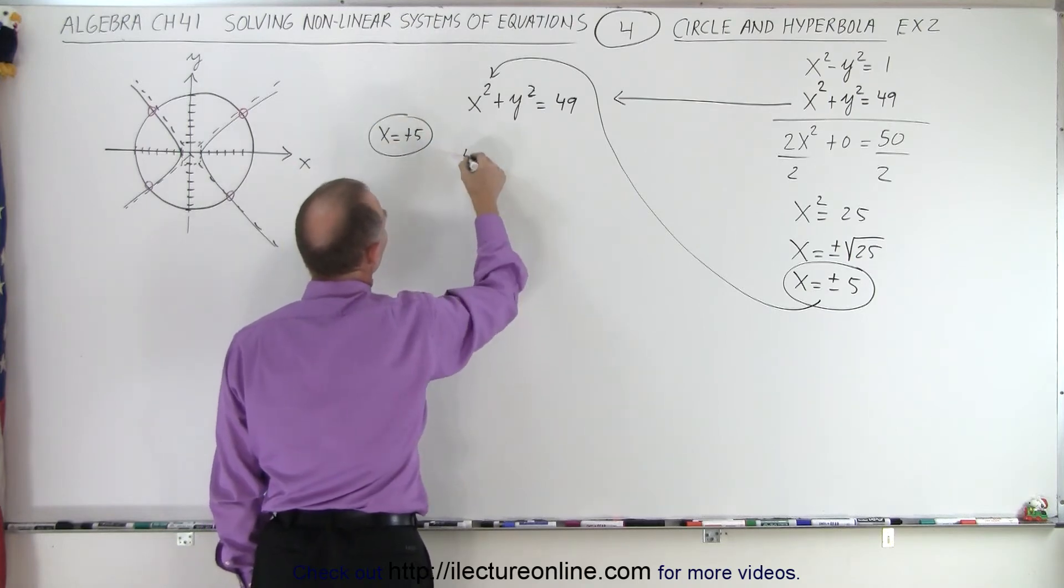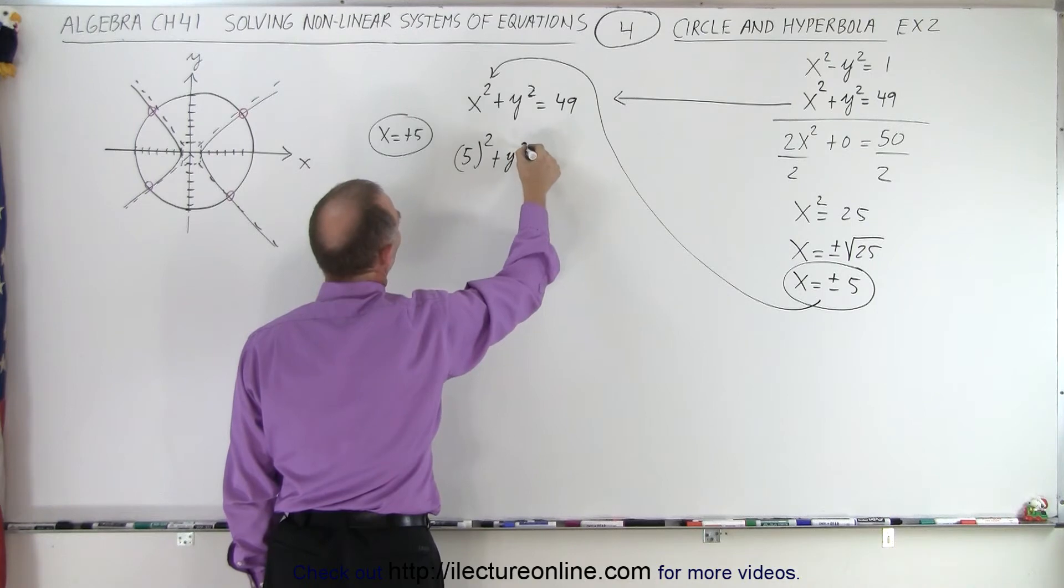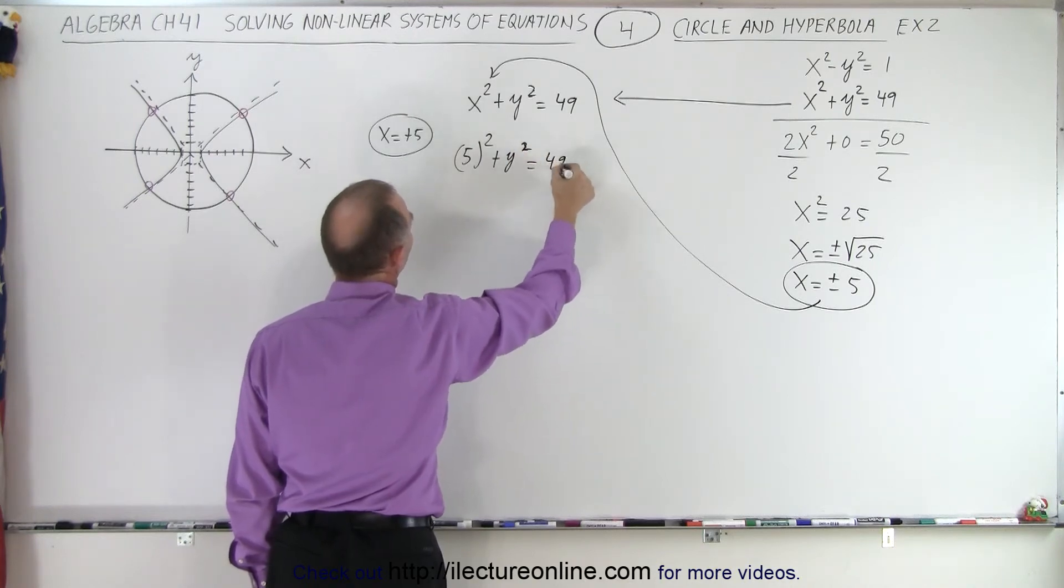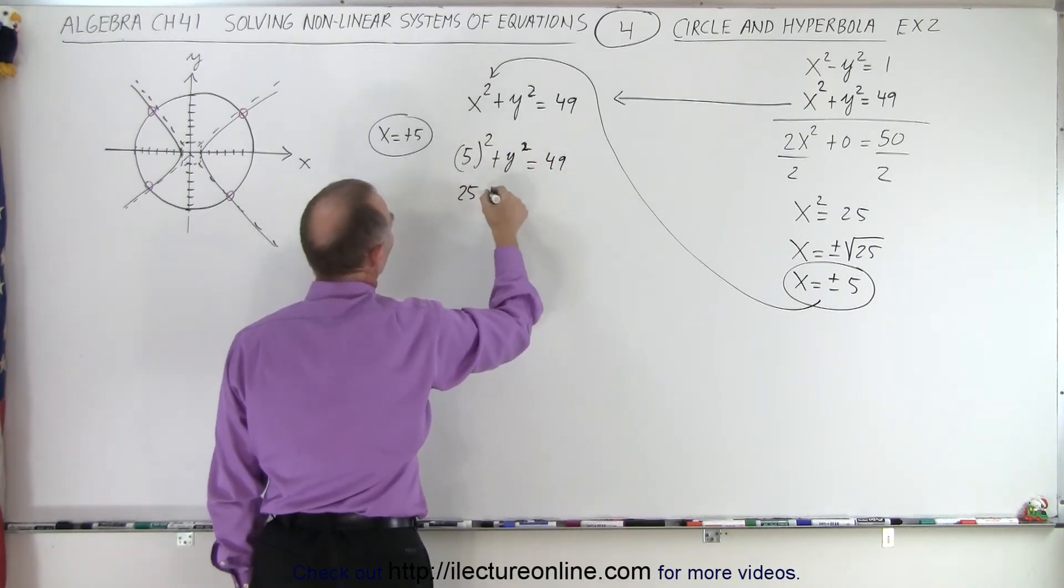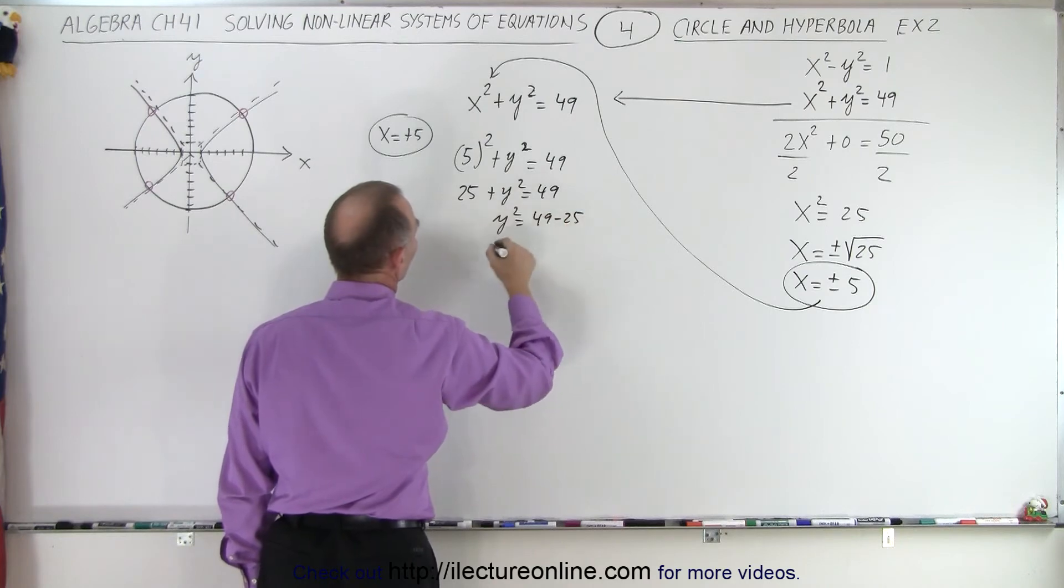And when we do that, we get 5 squared plus y squared equals 49. 25 plus y squared equals 49. Or y squared equals 49 minus 25. Or y squared is equal to 24.